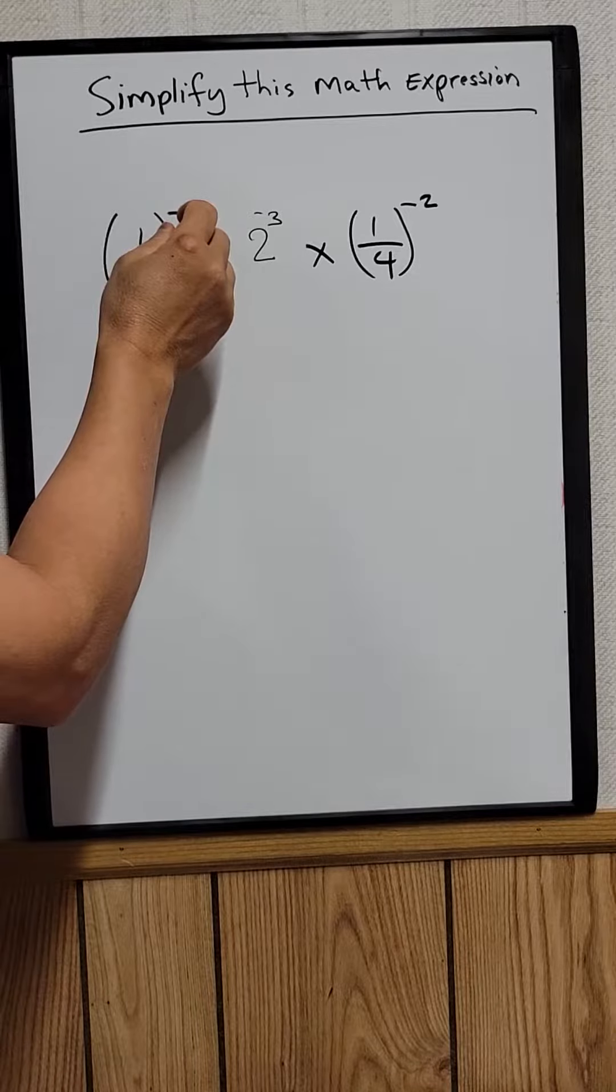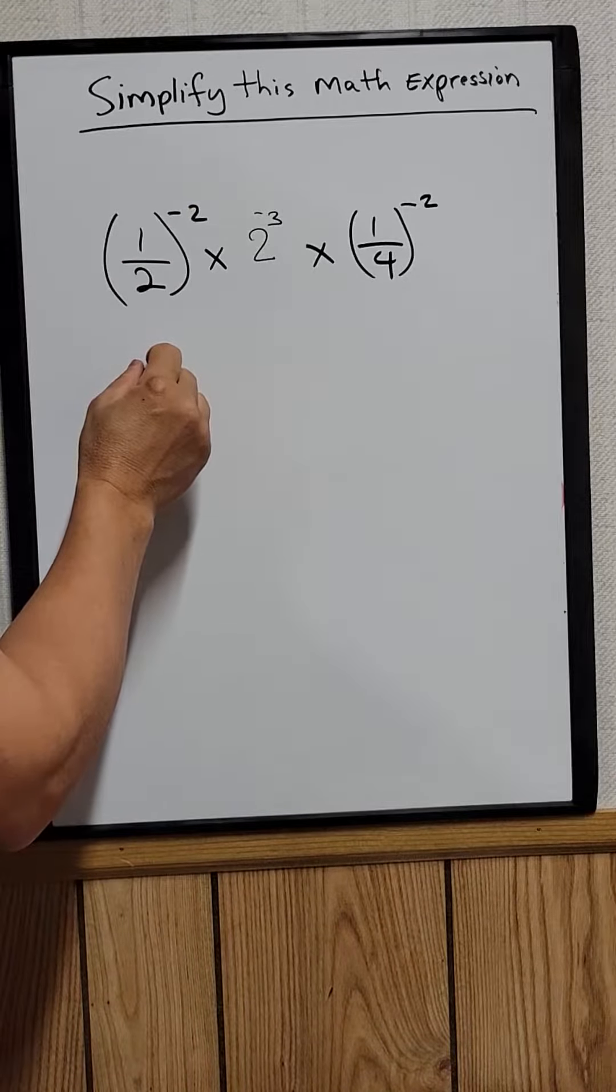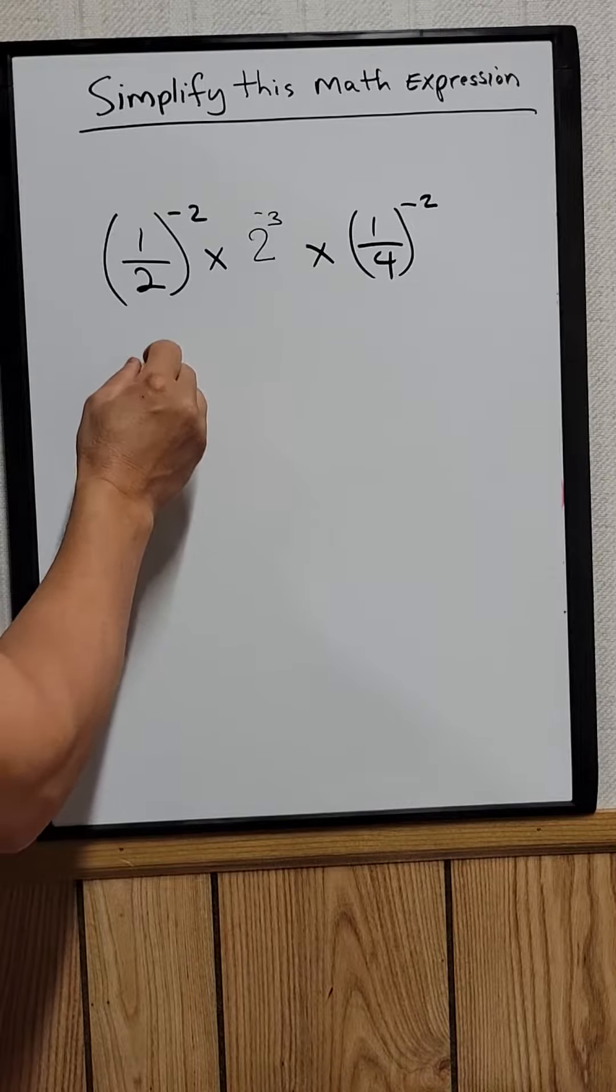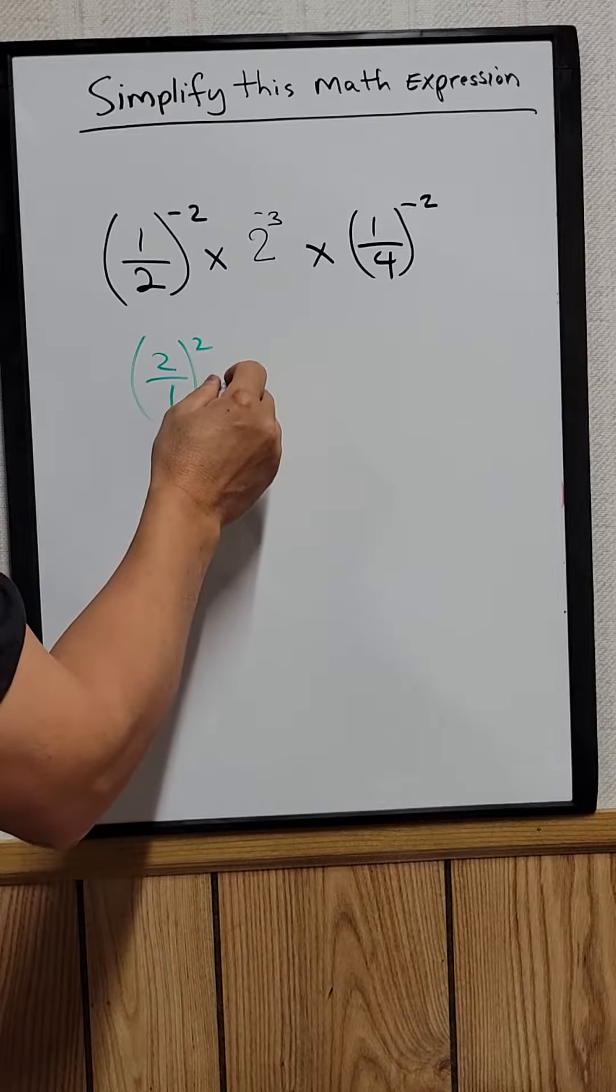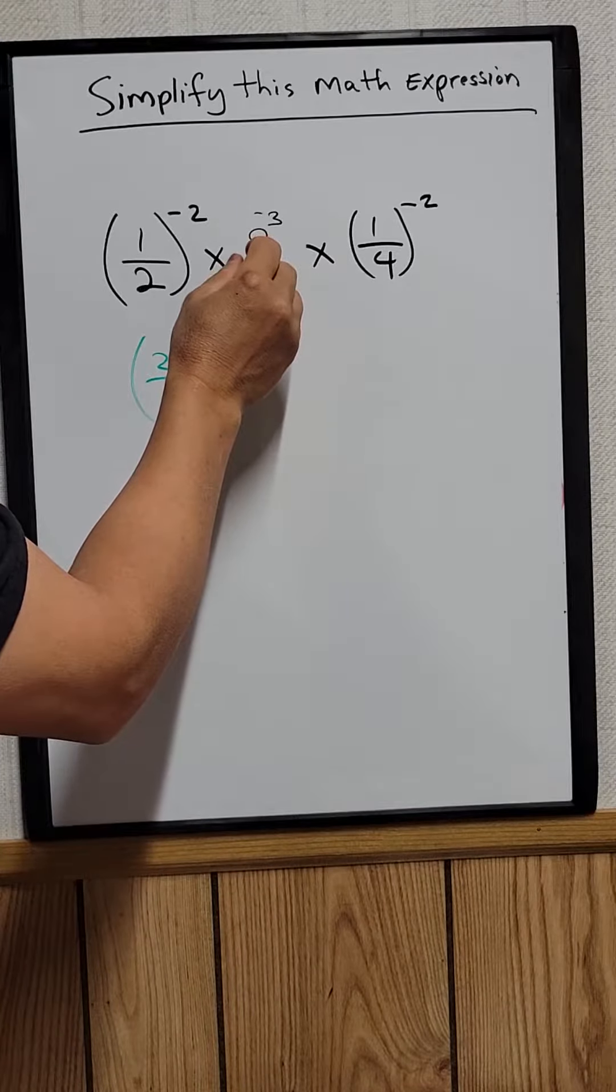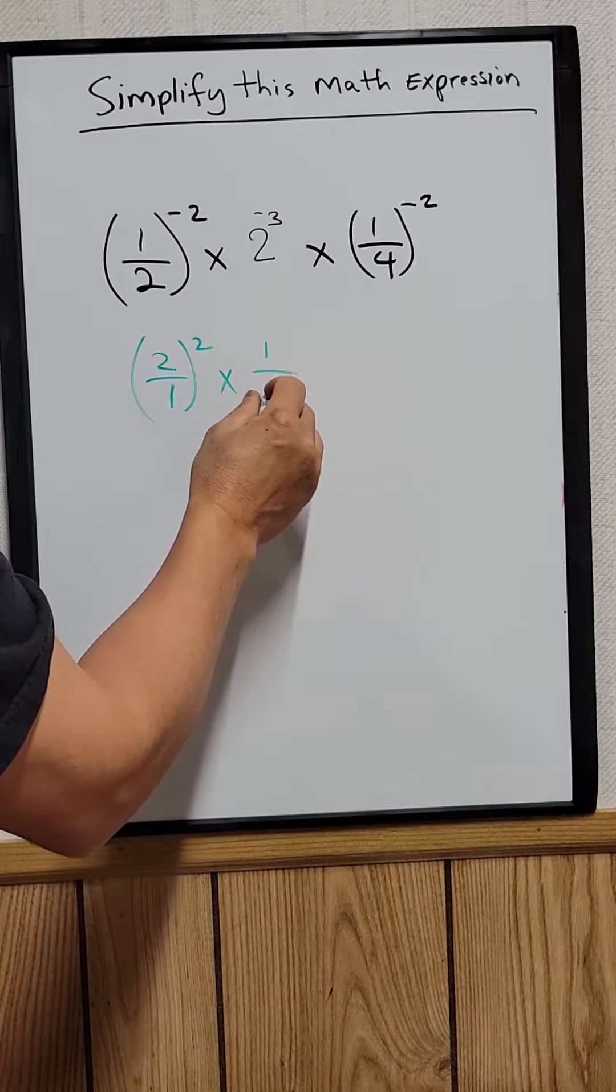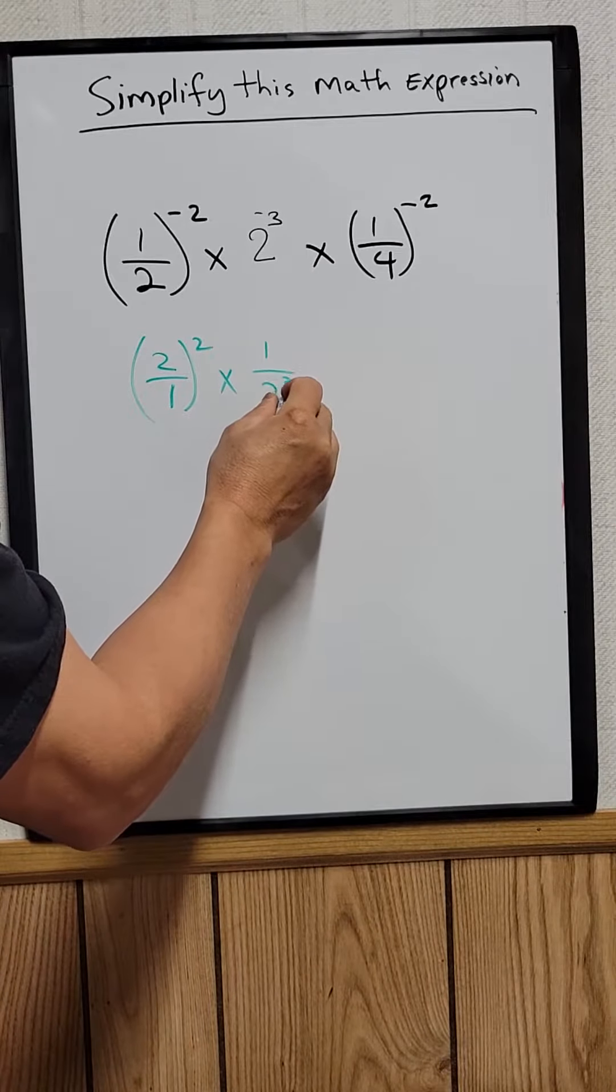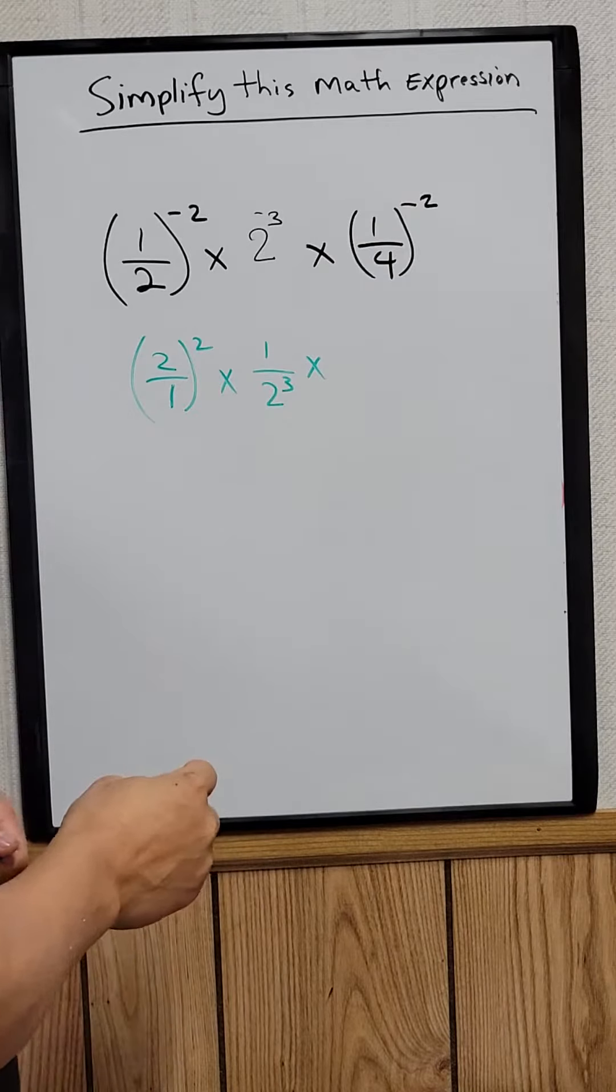So one-half to the negative two can be written as two over one to the two, and then times two to the negative three can be written as one over two to the third, times one-fourth to the negative two.